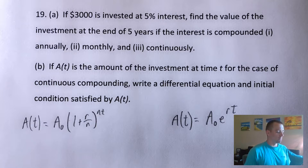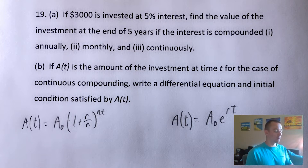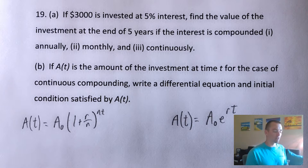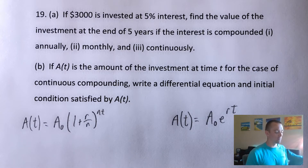Here's the problem we're going to be going over today. If $3,000 is invested at 5% interest, find the value of the investment at the end of five years if the interest is compounded: one, annually; two, monthly; and three, continuously. Then part B of this question: if A of T is the amount of the investment at time T for the case of continuous compounding, write a differential equation and initial condition satisfied by A of T.